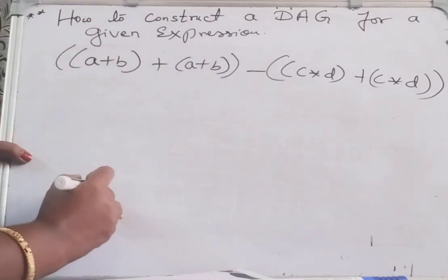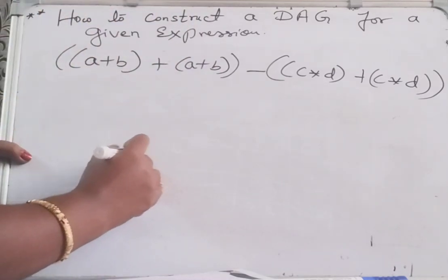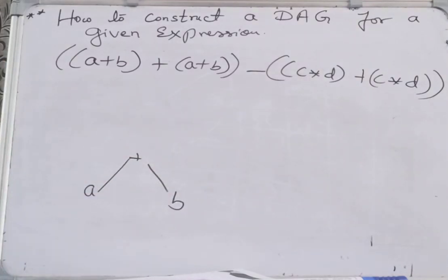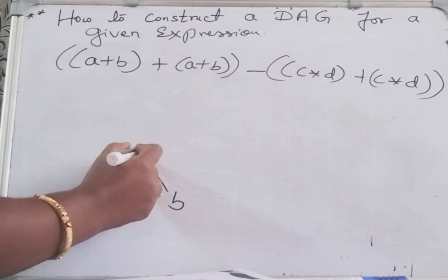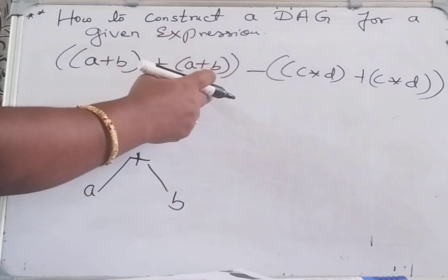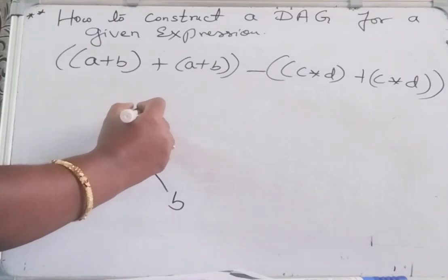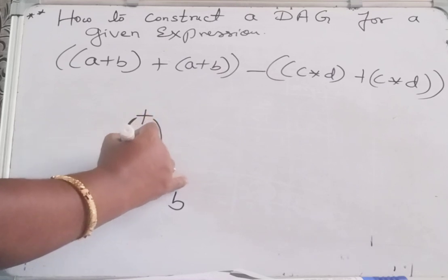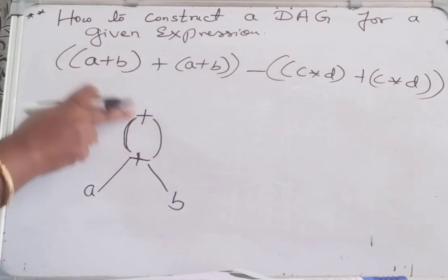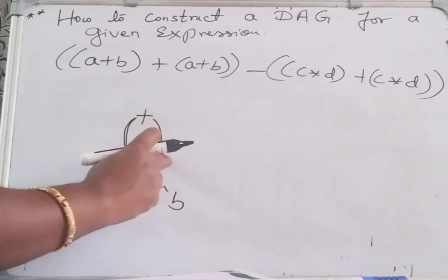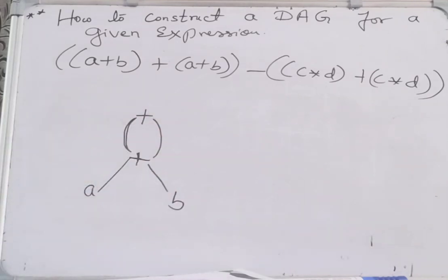So here write it as A plus B, A plus B, and this is plus. So how to write that A plus B here? Put this like a loop, you have to show like this: A plus B, A plus B. So if you put plus above this, it means this node holds A plus B, see A plus B, and again plus A plus B.